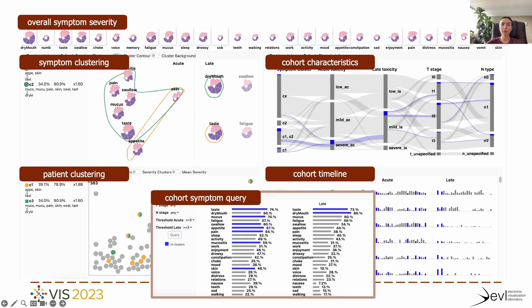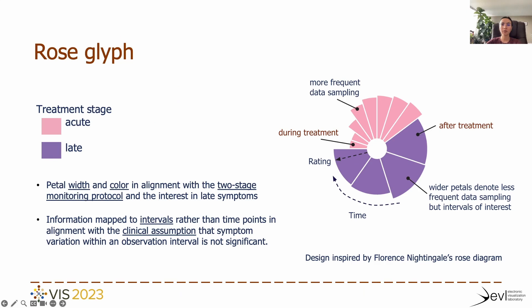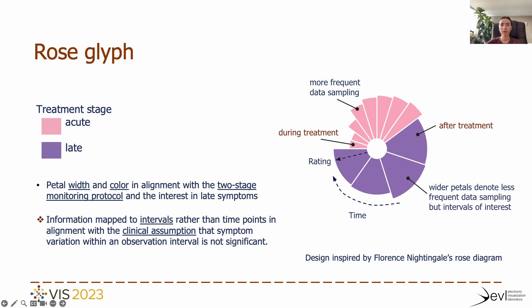Today I will describe our rose glyph encoding. Our visual design is inspired by Florence Nightingale's rose diagram. We use a rose glyph to encode the trajectory of a single symptom severity. The mean rating across the cohort is encoded for each time interval using variable radius petals, with the width of the petals driven by the two-stage data sampling rate — more frequent during acute, then in late — and by the modeler's interest in late symptom prediction. The symptom trajectory starts with the first time interval at 9 o'clock and progresses clockwise, with pink petals encoding acute treatment time intervals while purple petals encode late intervals. The flat interval mapping is in alignment with the clinical assumption that symptom variation within an observation interval is not significant.